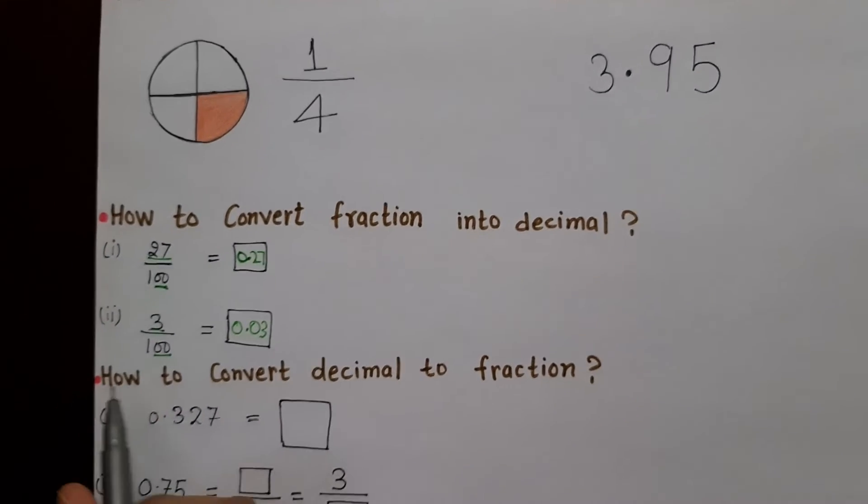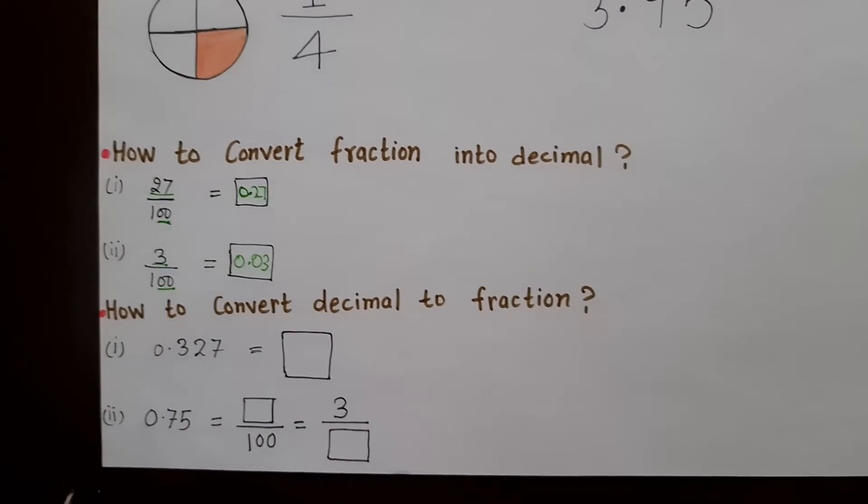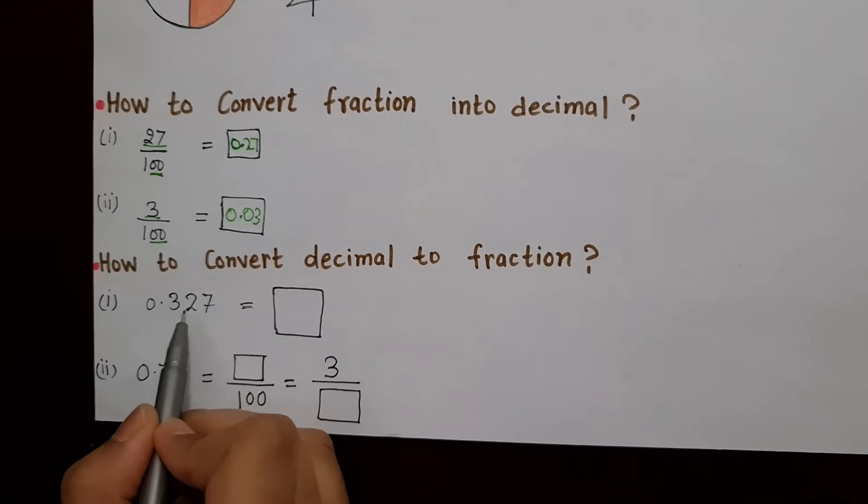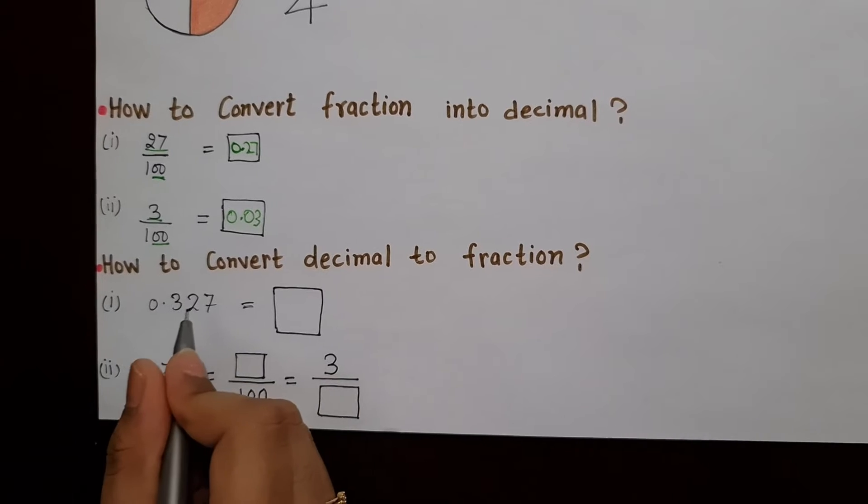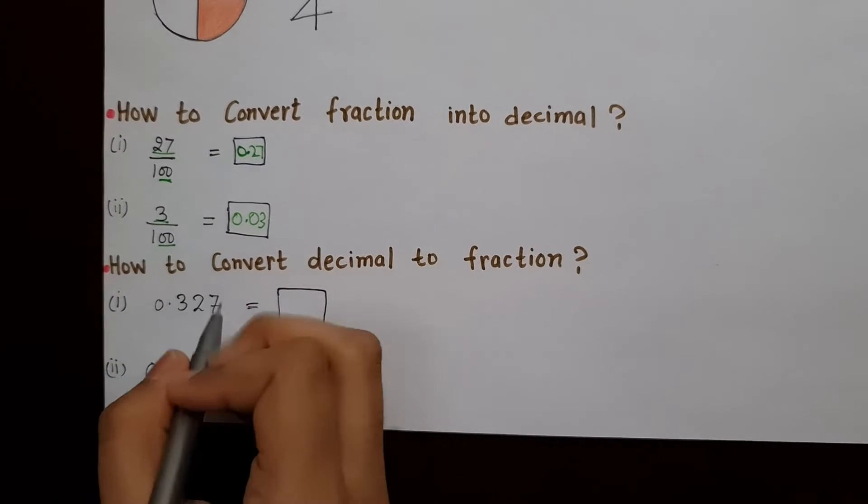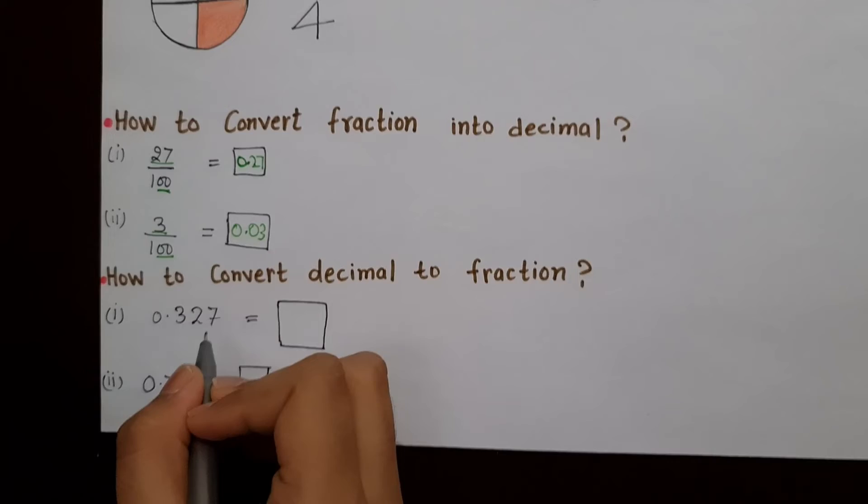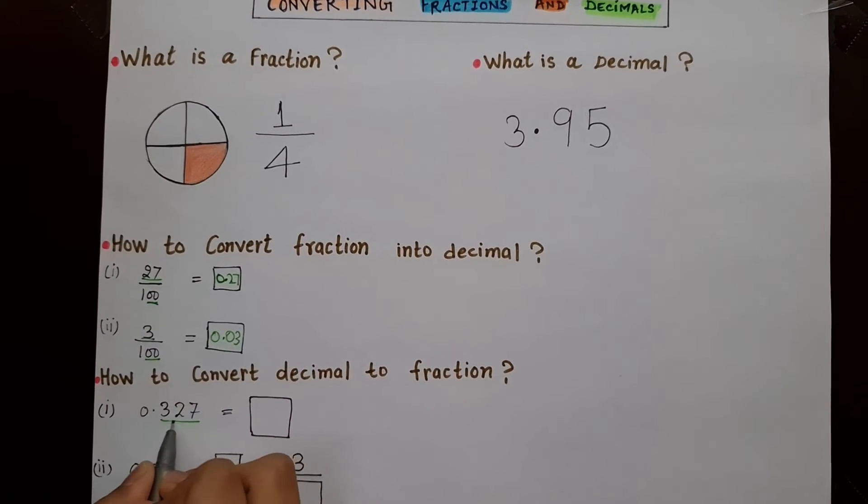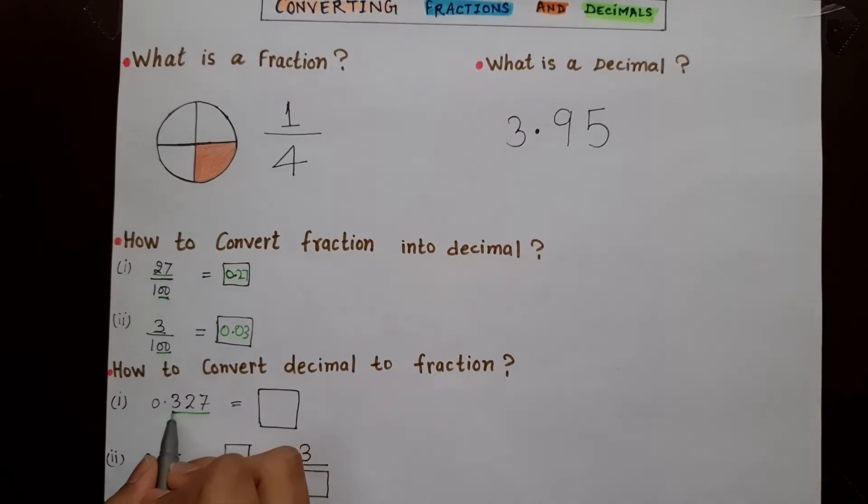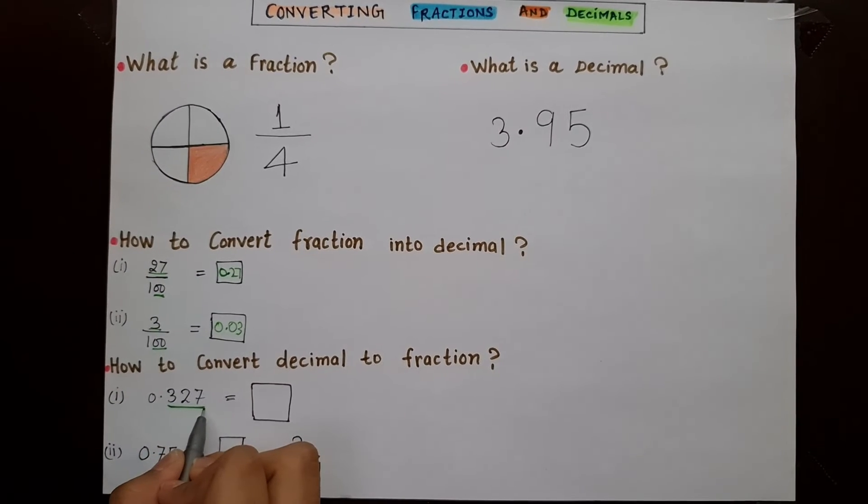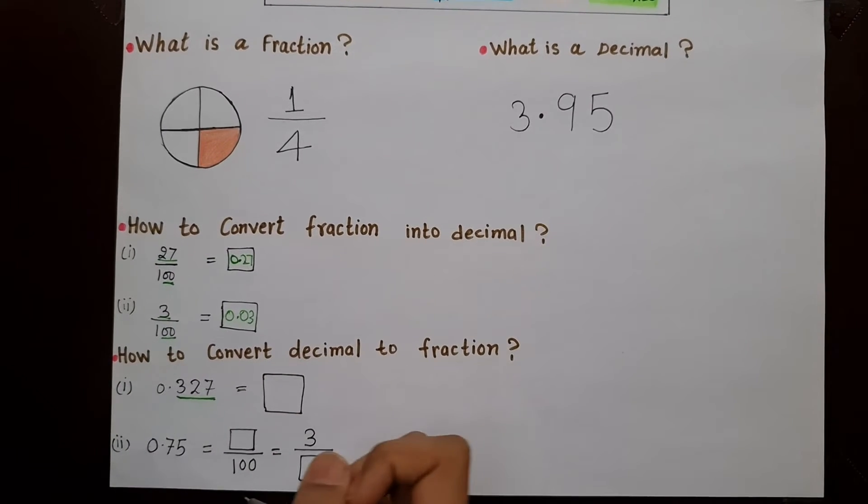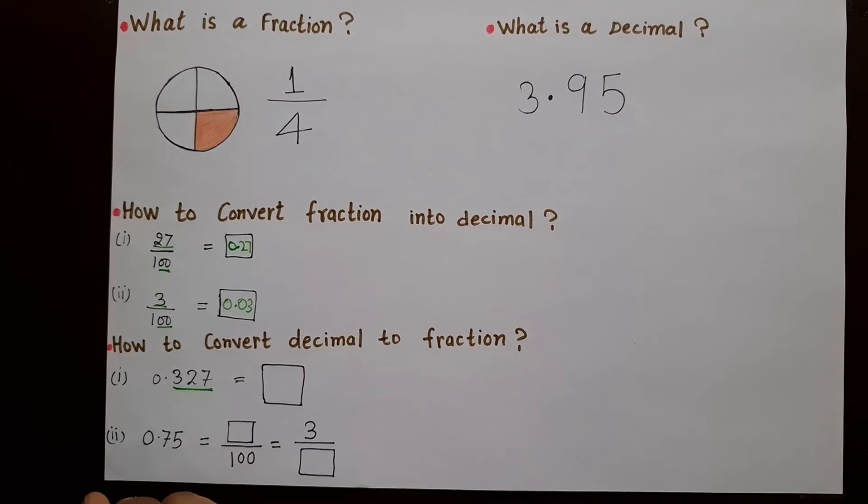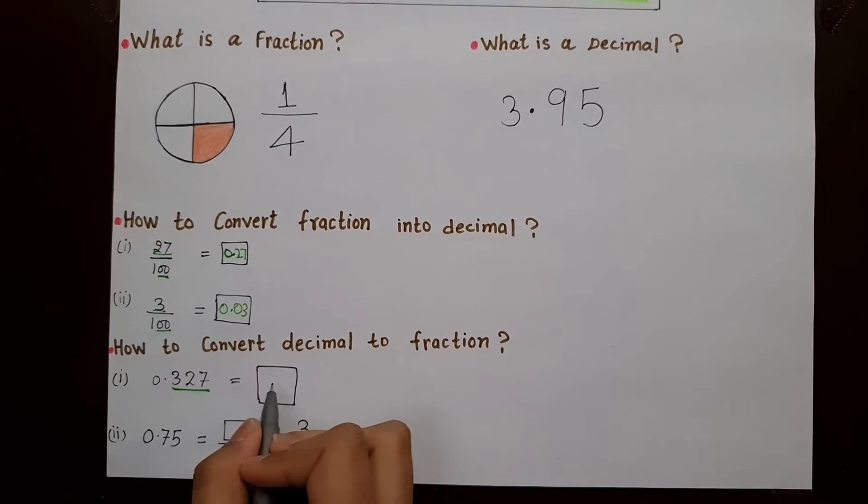Now let us go to how to convert decimals to fractions. So we have a decimal here, 0.327. We do the same as we do in fractions, but the opposite. Here we look at the number of decimal places. So it is three places to the right. So we have to check in the basis of 10 numbers which number has three zeros. So the number which has three zeros is 1000.